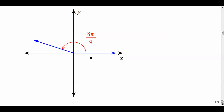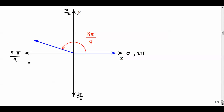Now we're working in radians. We know that 0, π/2, π, 3π/2, and 2π mark the axes. Our denominator is 9, so we want to think in terms of ninths. Instead of π radians, we use 9π/9. The reference angle for 8π/9 is the difference between the terminal side and 9π/9, so: 9π/9 minus 8π/9 gives a reference angle of π/9.